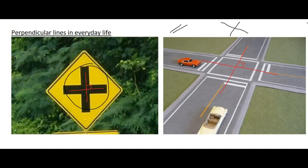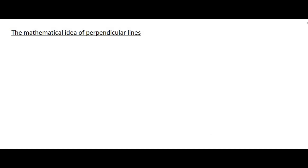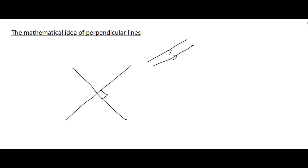But what exactly does this mean mathematically? When we looked at parallel lines we said they have the same gradient. However, perpendicular lines are completely opposite and always hit at 90 degrees. What this means mathematically is that if you multiply the two gradients together, and the lines are perpendicular, your answer should always be negative 1. So gradient of line 1 times gradient of line 2 equals minus 1.